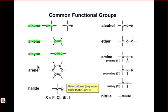If we move on and take a look at an arene, an arene is a six-membered ring composed of carbon atoms that contains a conjugated pi system, meaning that between every double bond there is a single bond.